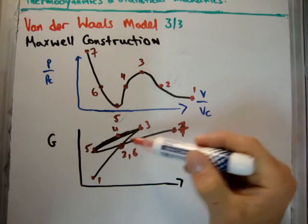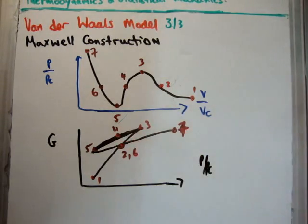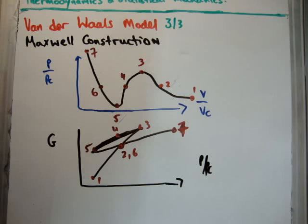We see once we hit points 2 and 6, the Gibbs free energy actually increases again. That implies that there isn't equilibrium happening. This is an unstable state. The point is here we have an unstable state, which is, of course, a phase change.